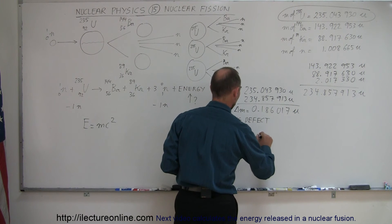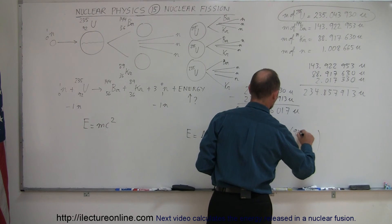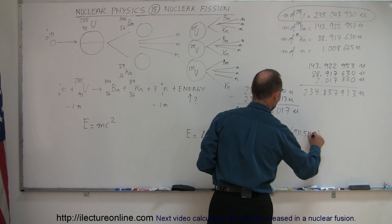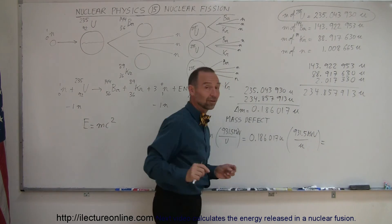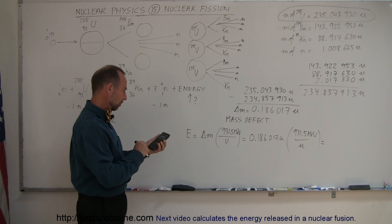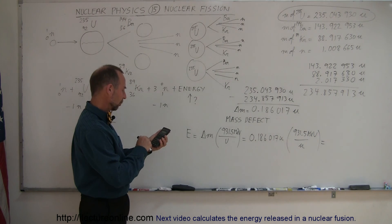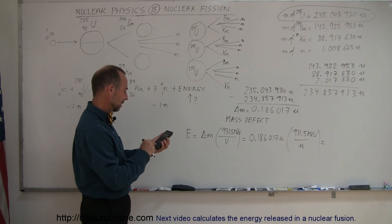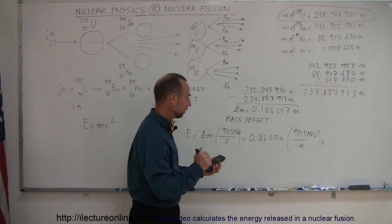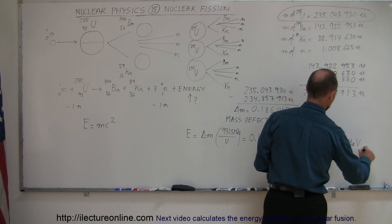This is equal to 0.186017 atomic mass units multiplied by 931.5 MeV per atomic mass unit, and that tells us how much mass is released in each of such reactions. 0.186017 times 931.5 equals 173.3 MeV. There you go.